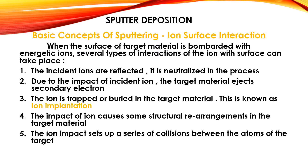This is the basic concept of sputtering. When the surface of a target material is bombarded with energetic ions, several types of interactions of ions with the surface can take place. First, the incident ions may be reflected or neutralized in the process. Second, due to the impact of incident ions, the target material ejects secondary electrons. Third, the ion is trapped or buried in the target material — this is known as ion implantation. Fourth, the impact of ions causes structural rearrangements in the target material. Fifth, the ion impact sets up a series of collisions between the atoms of the target.